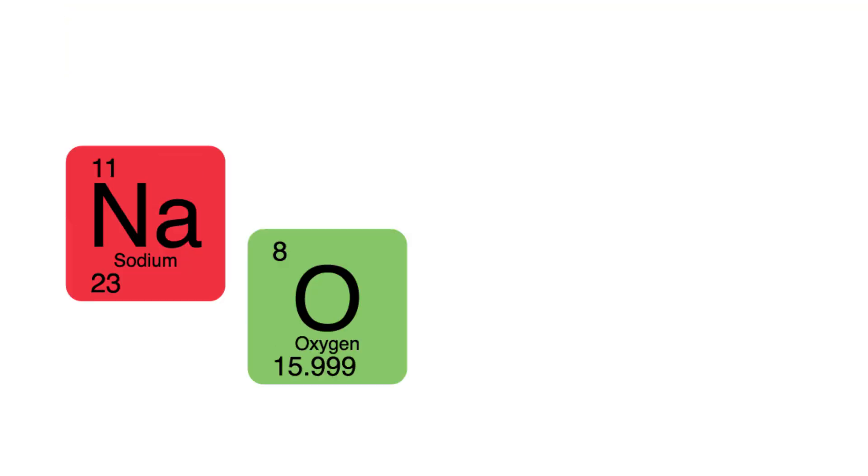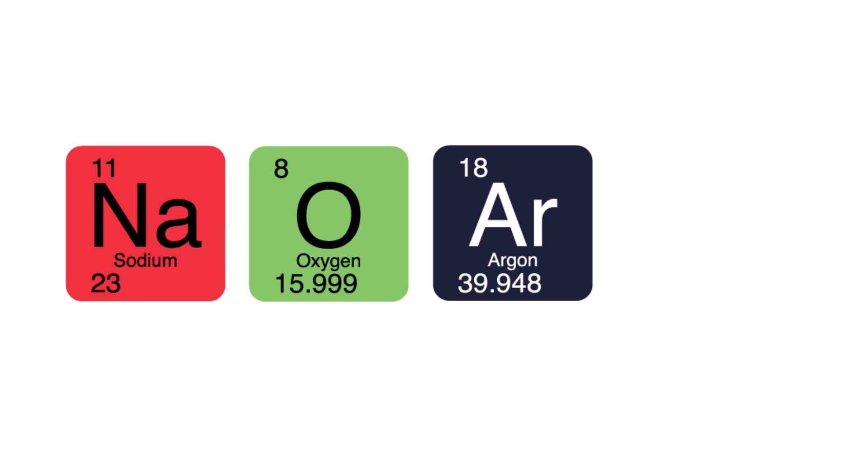Each element has a different symbol, such as Na, O and Ar. What element is represented by the symbol H? H represents hydrogen.